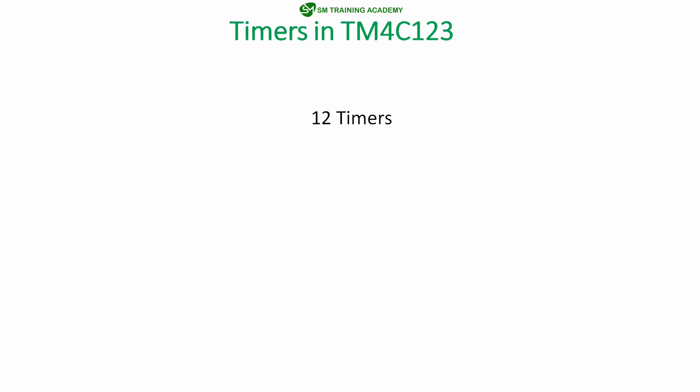Basically, we have 12 timers available in this microcontroller. Of these 12 timers, 6 timers are 16/32-bit timers — that is, 6 timers can be utilized as 16-bit timers or as a whole 32-bit timer. Among the 12 timers, another 6 timers are 32/64-bit timers — each individual timer in these 6 can act as a 32-bit timer, and as a whole it can act as a 64-bit timer.